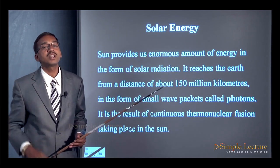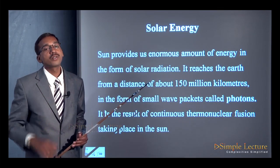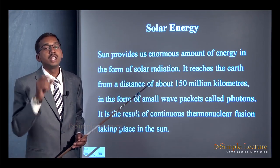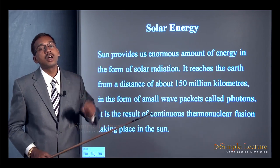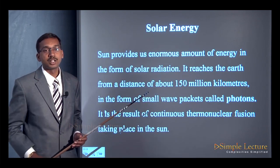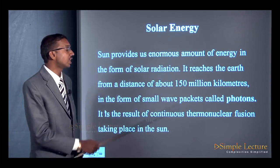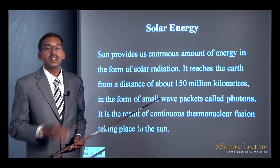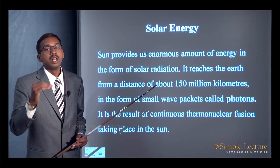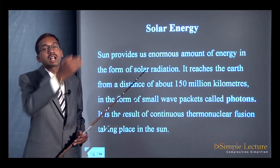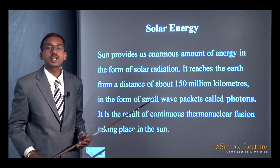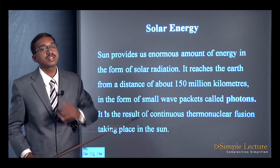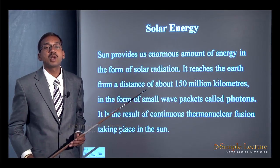The radiation we receive from the sun to the Earth's surface is not continuous — it comes in the form of wave packets called photons, also called quanta. This particle nature of radiation is the result of continuous thermonuclear fusion taking place inside the sun. The sun does not show symptoms of cooling because it is the fusion reaction occurring inside that continuously produces radiation on a large scale.